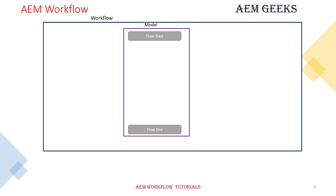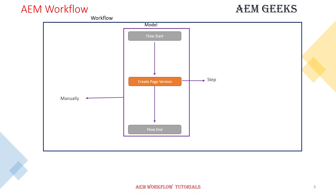I'll take a very simple use case to explain workflow models. I'll create a model which will create page versions. If you are not aware, you can create any number of versions of pages and restore any page at any time as per your need. For this model, I'll use a step which will create page versions, and then I'll call this workflow manually as well as show you by creating a launcher.